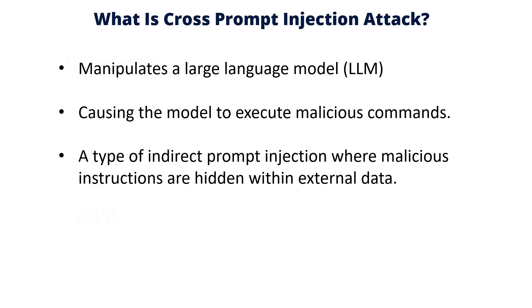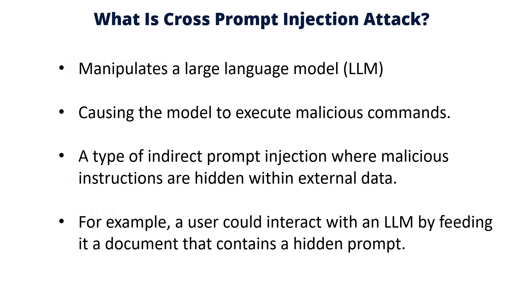Unlike a traditional prompt injection, a cross prompt injection is a type of indirect prompt injection where malicious instructions are hidden within external data such as a document, and triggered later through user interaction. For example, a user could interact with an LLM by feeding it a document that contains a hidden prompt. The LLM may then act on this hidden prompt later, potentially leading to unauthorized data access or other unauthorized actions.